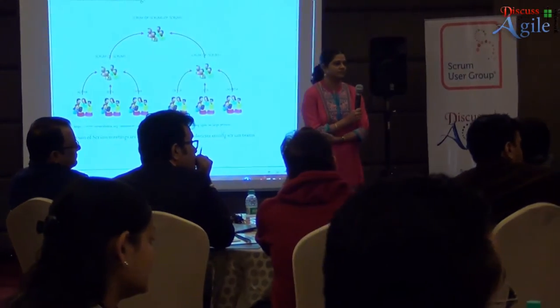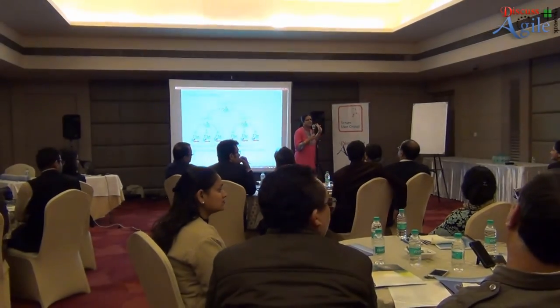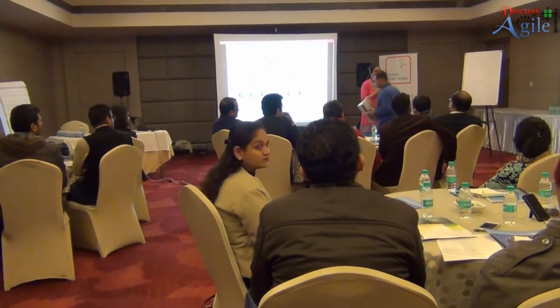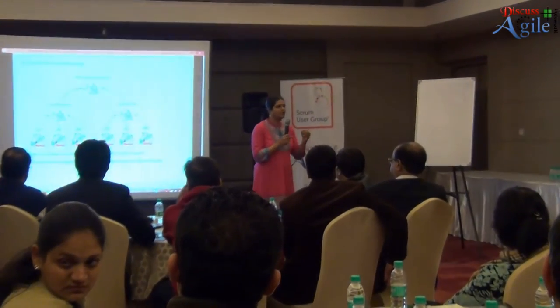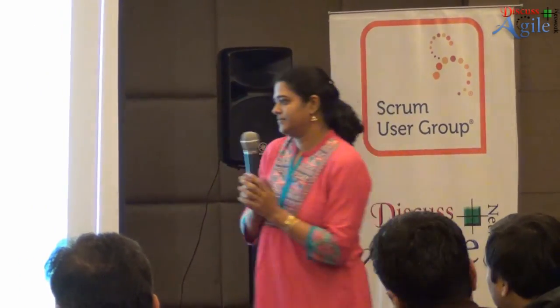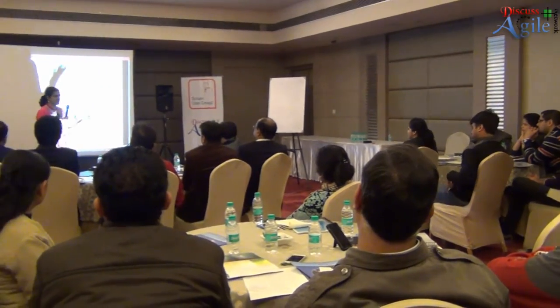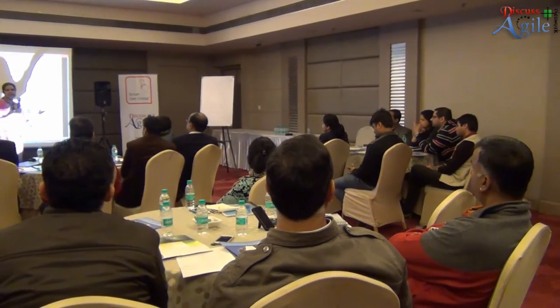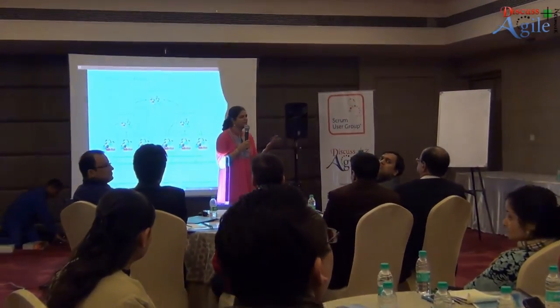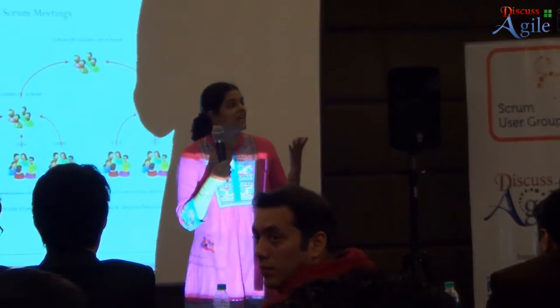The Scrum of Scrum master, or chief scrum master, plays more of a program manager role — mainly tracking dependencies rather than assigning work. This is essentially the first step of scaling Agile. Agile is meant for co-located teams of maximum nine members; when you need to scale, the first level is Scrum of Scrum with multiple scrum teams, and this can go to n number of levels.